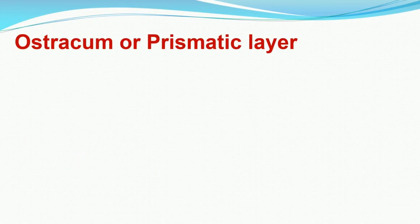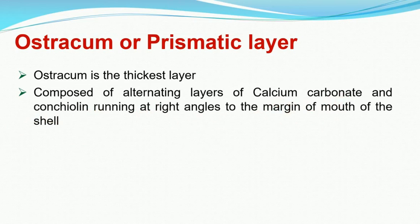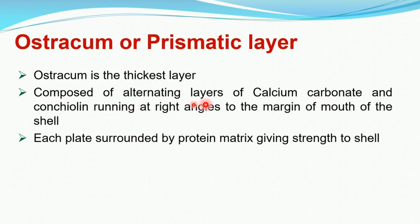The middle layer, the ostracum or prismatic layer, is the thickest layer of the shell. It is composed of calcium carbonate and concholine running at right angles to the margin of the mouth of the shell. These two chemical components form plate-like structures, and each plate is surrounded by a protein matrix which gives strength to the shell.